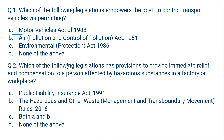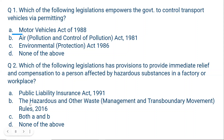Question two: which of the following legislations has provisions to provide immediate relief and compensation to a person affected by hazardous substances in a factory or workplace? A: Public Liability Insurance Act 1991. B: The Hazardous and Other Waste Management and Transboundary Movement Rules 2016. C: Both A and B. D: None of the above.